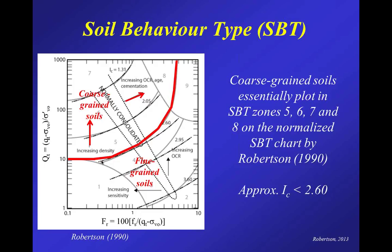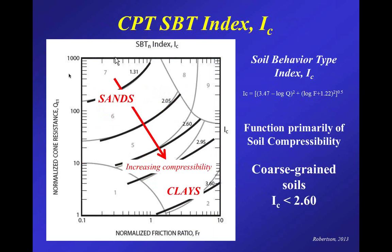The normalized soil behavior type can be simplified as a soil behavior type index IC — essentially the radius of concentric circles on the chart. When IC is small, you're in the upper left in dense coarse-grained materials; when IC is very large, you're in the very soft fine-grained soils. Coarse-grained soils generally have a soil behavior type index less than about 2.6 — as an approximation, when IC is less than 2.6 you're typically in the zone of coarse-grained soils.